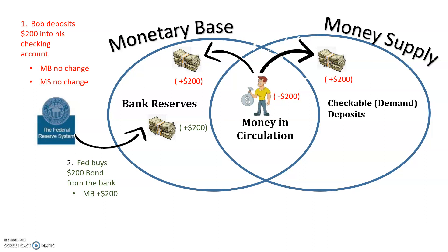So what we see here is that the monetary base increases by $200 because the bank reserves go up. But there is no change in money in circulation and no change in checkable deposits, so the money supply does not change when the Fed buys bonds from banks.